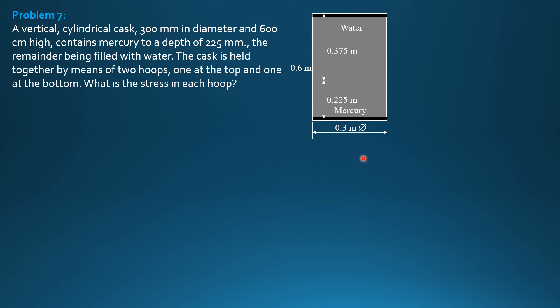So let's draw the pressure diagram on the half side of the tank or the cask. So let's call this 2 times tension in the upper hoop, 2 times tension in the bottom hoop. Then this is the pressure diagram due to water, then additional pressure diagram due to mercury.